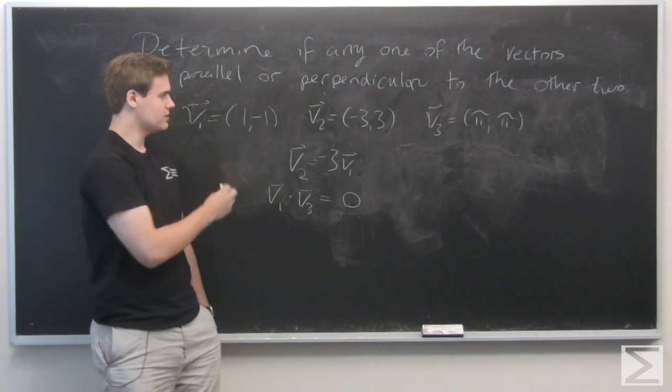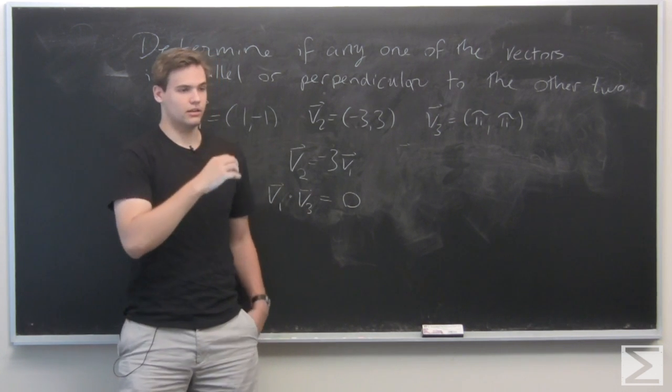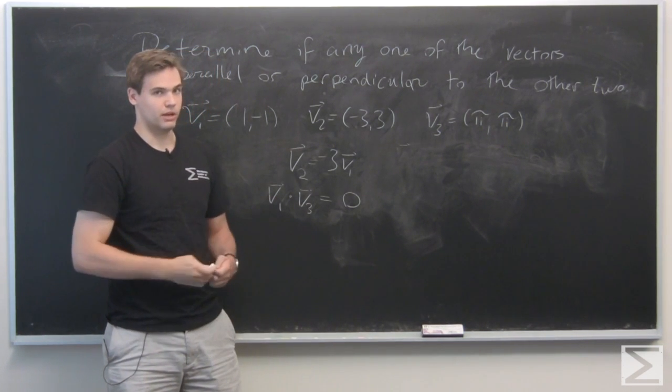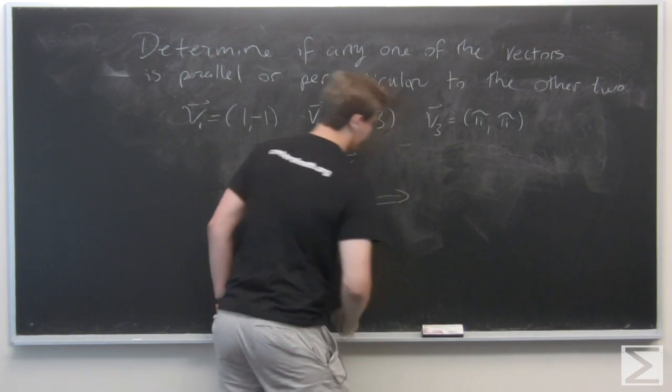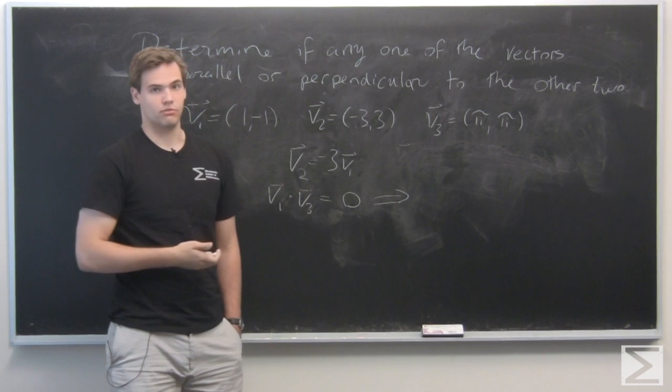Since v2 is a scalar multiple of v1, and you can pull out scalar multiplication in dot products, we see that this also implies that v2 is perpendicular to v3 as well.